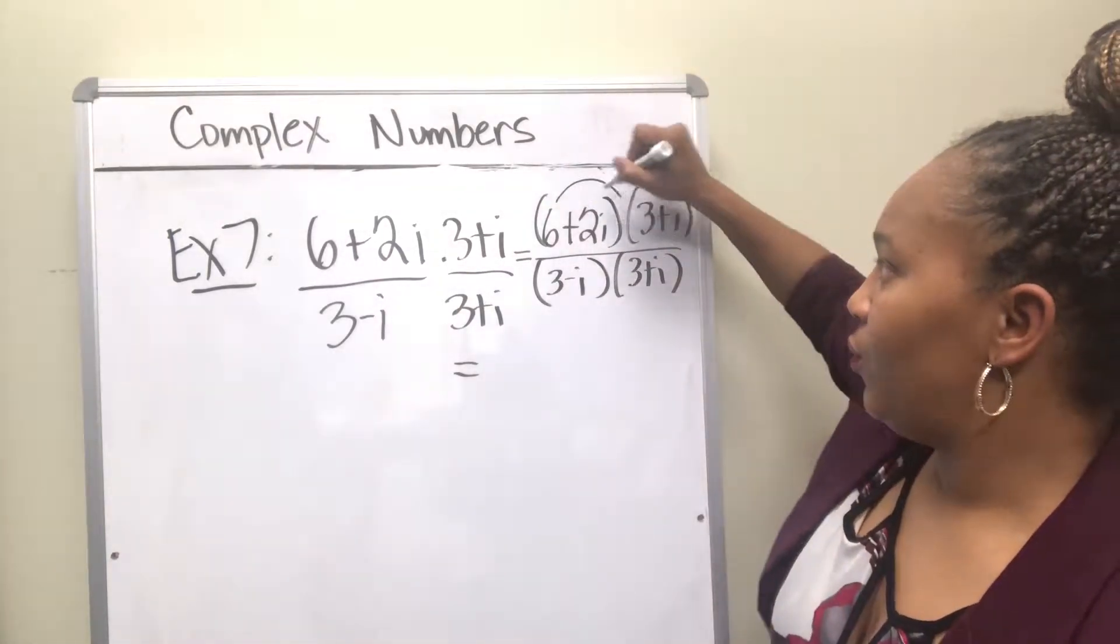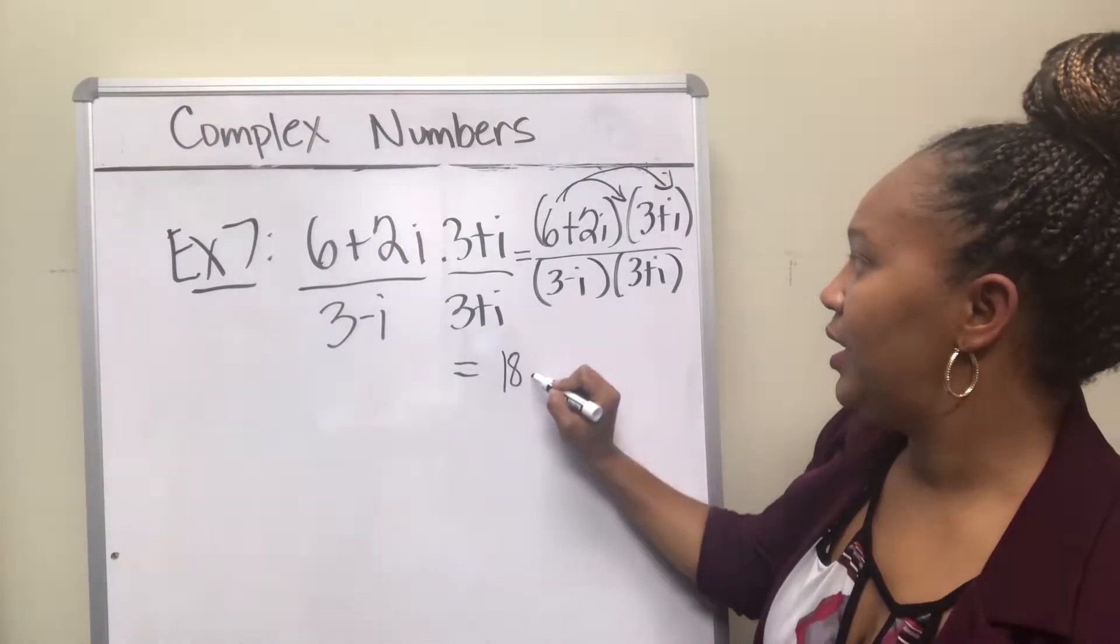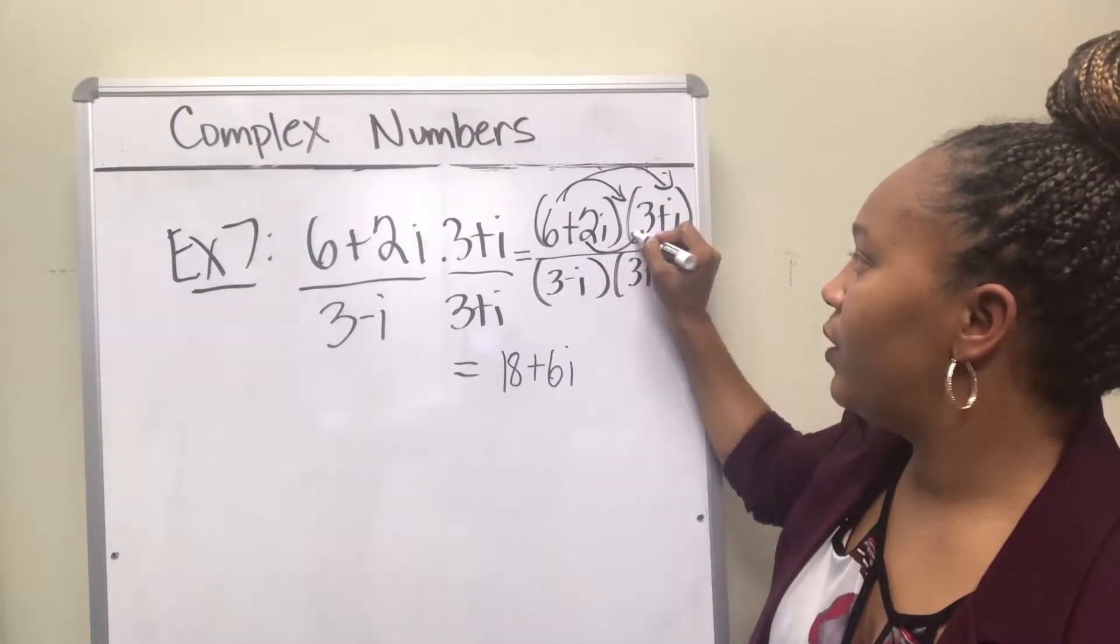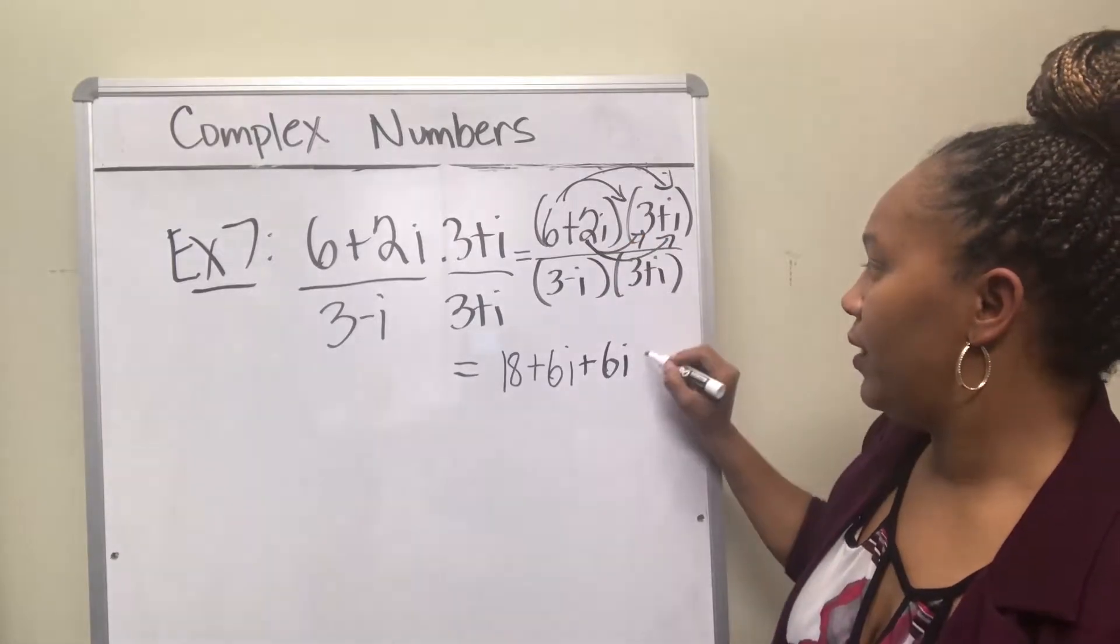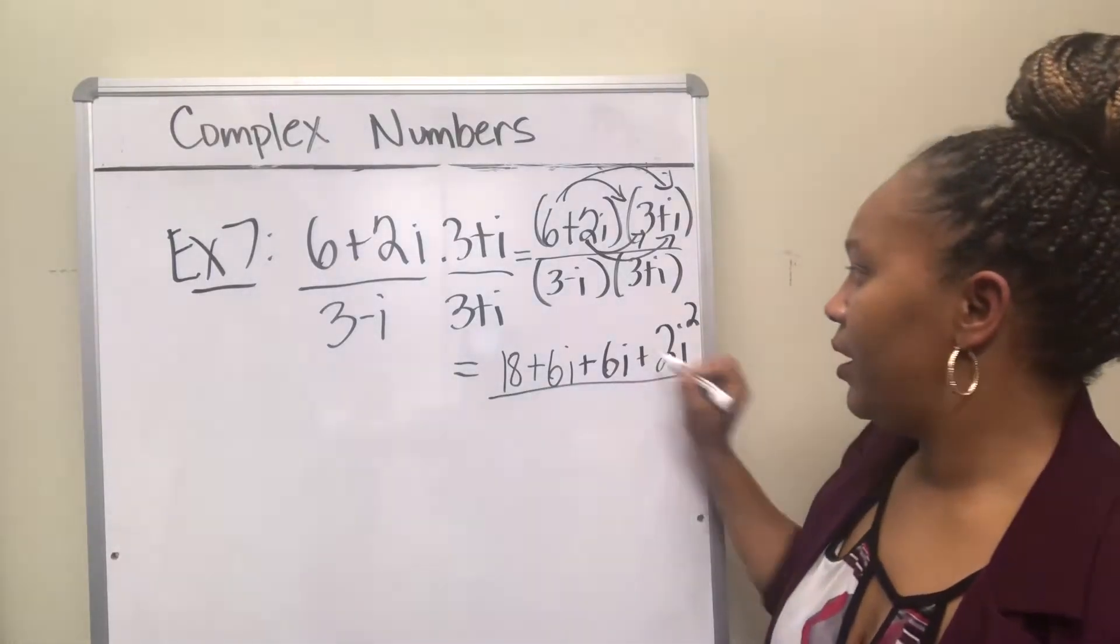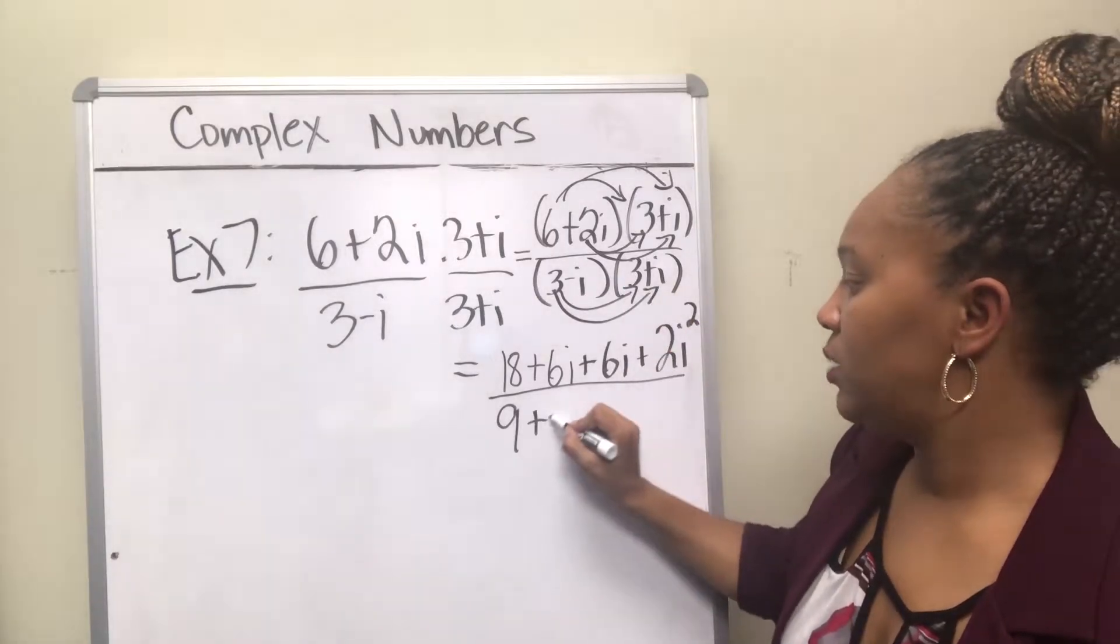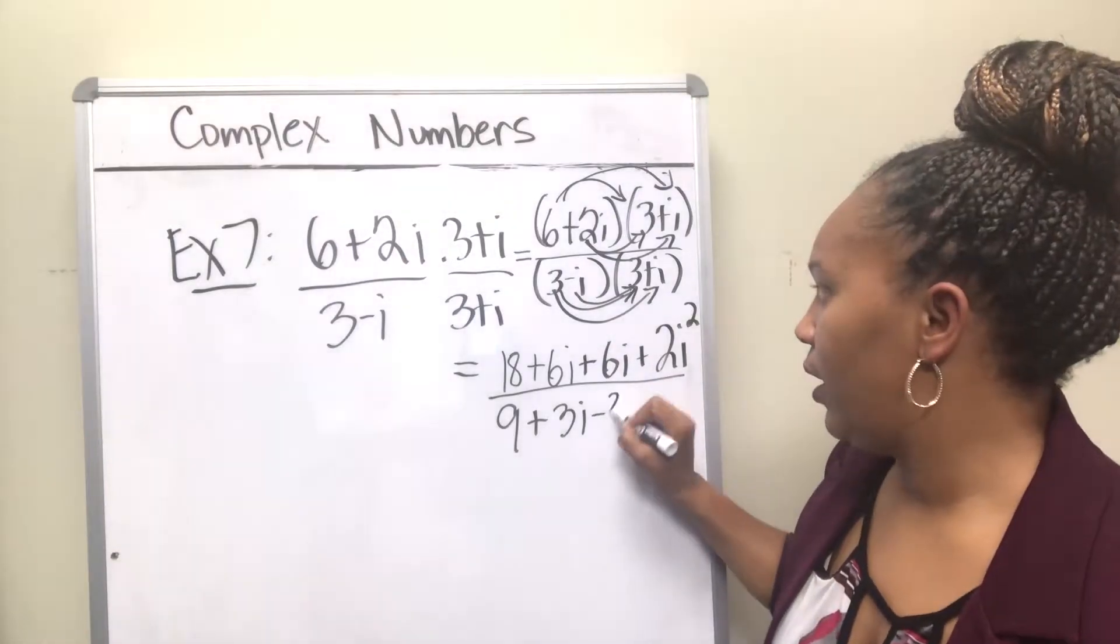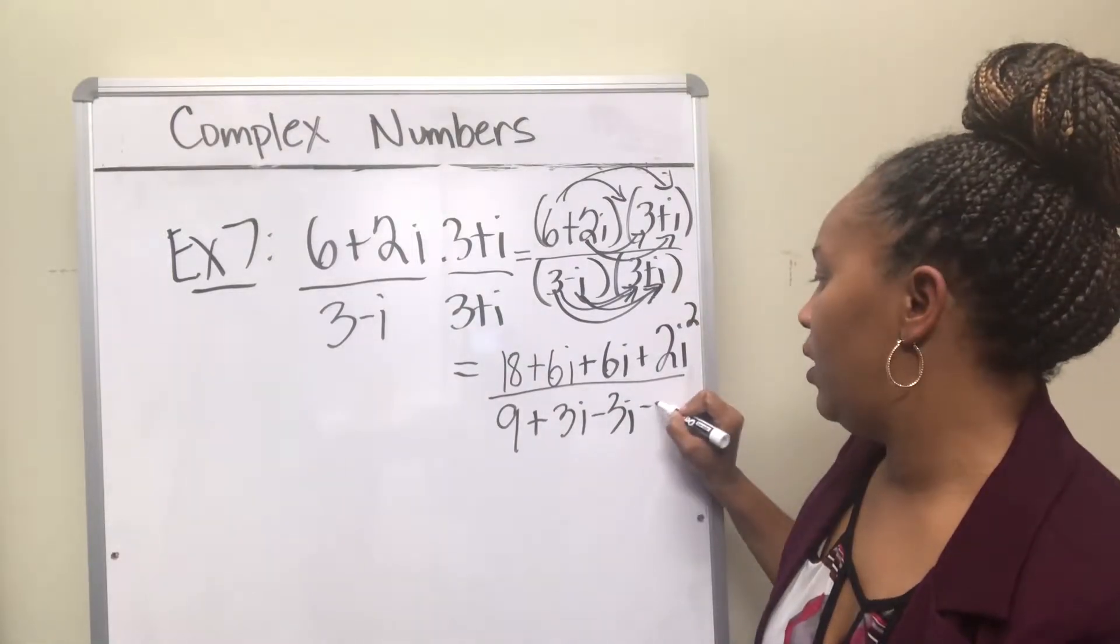So you have to multiply the numerator. So the 6 times 3 and the 6 times i. 6 times 3 is 18. 6 times i is positive 6i. The 2i and the 3. 2i times 3 is 6i. And the 2i and the i, which is 2i squared. And then the denominator you have 3 times 3, which is 9. 3 times i, which is positive 3i. Negative i times 3, which is negative 3i. And negative i times i squared, which is negative i squared.